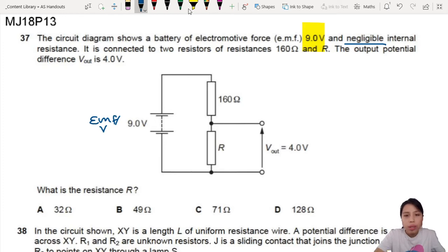Then two resistors. We don't know one. There's an output potential difference. What is this? This is basically saying, if you connected a voltmeter here and here, you will read 4 volts. That's what I mean.